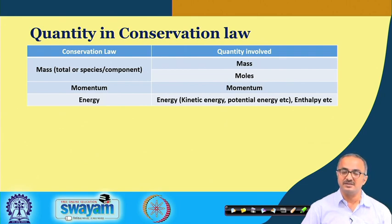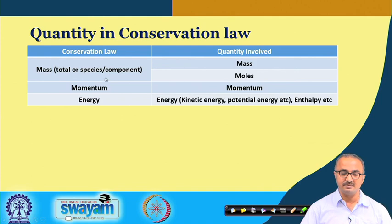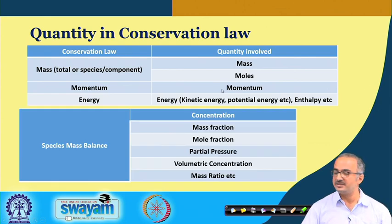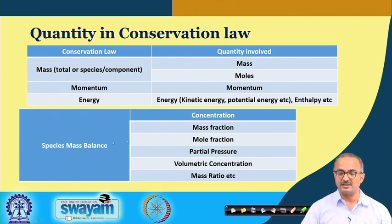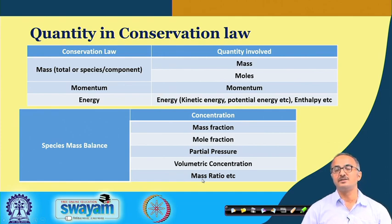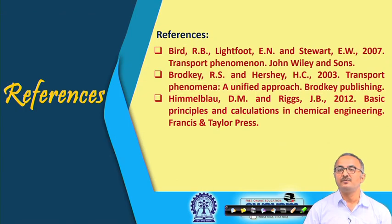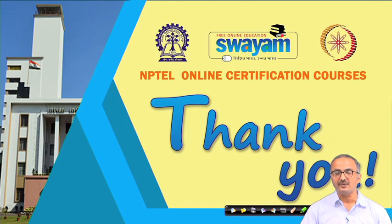The various quantities in the conservation equations include mass for mass balance — which can be on a species or over the whole system — momentum for the velocity-related balance, and energy including different types of energy and enthalpy. For species mass balance, we represent concentrations in various ways: mass fraction, mole fraction, partial pressure, volumetric concentration, and mass ratio — all of which we shall study in detail in future lectures. Thank you.